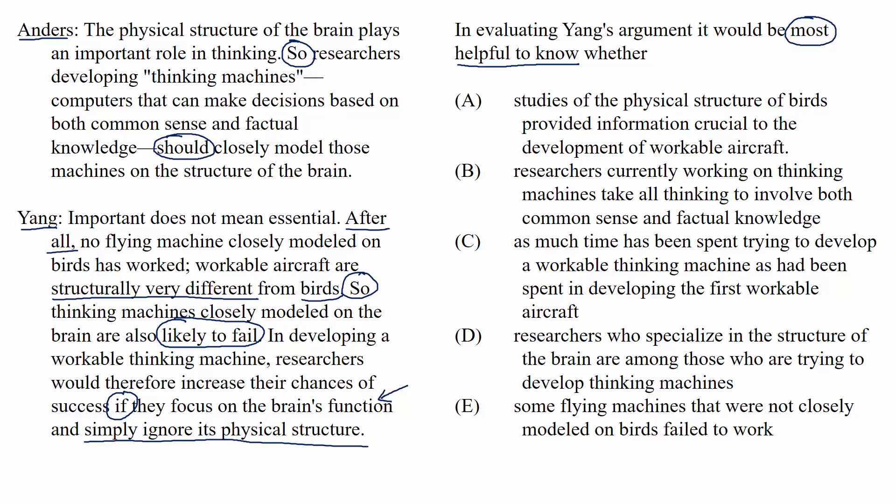For these question types, sometimes you'll see a gaping hole and say, 'I need to know X.' Other times you might not see it and that's okay — you can go to the choices and do what we're about to do here. As we evaluate the choices, let's turn each of them into a question. If answering the question with a yes moves the argument differently than answering with a no, that means we have our answer. But if we find ourselves saying 'I really don't care either way,' then we're looking at a wrong choice.